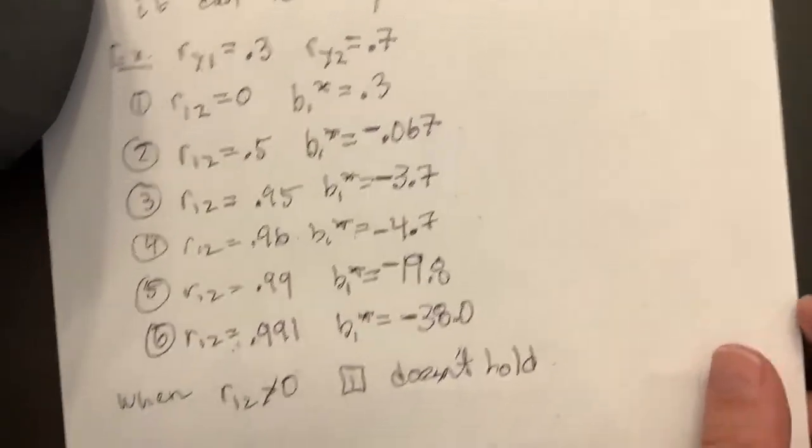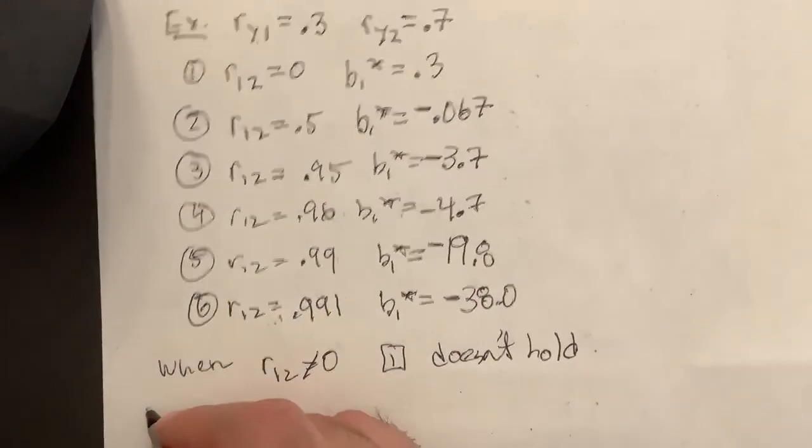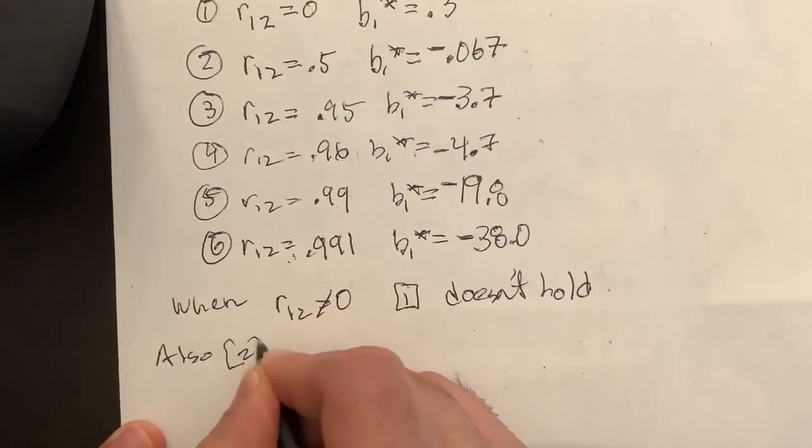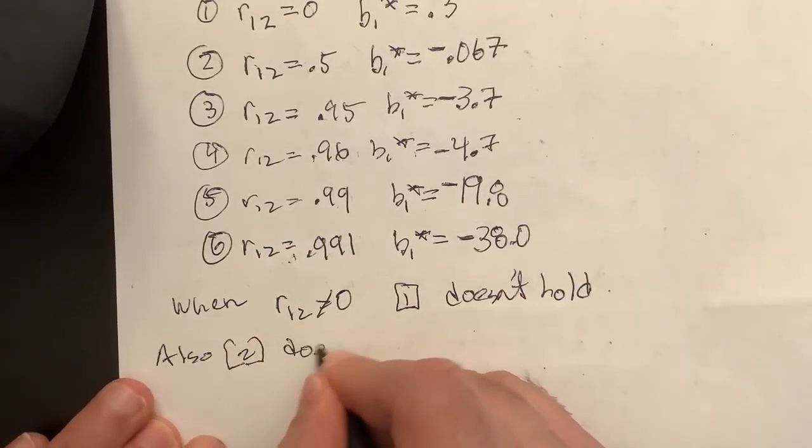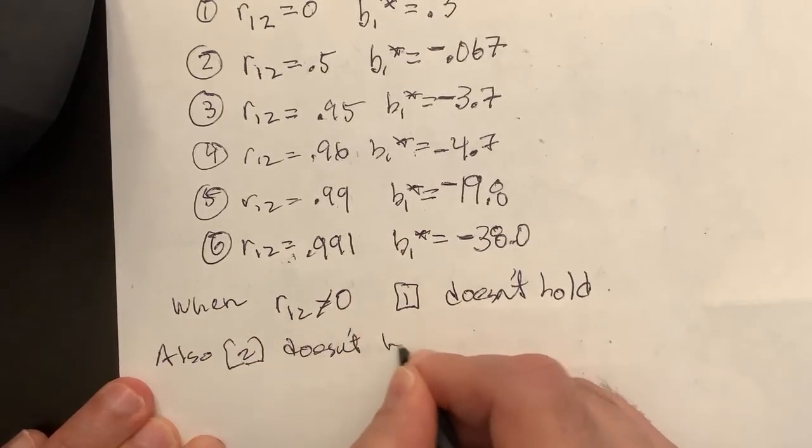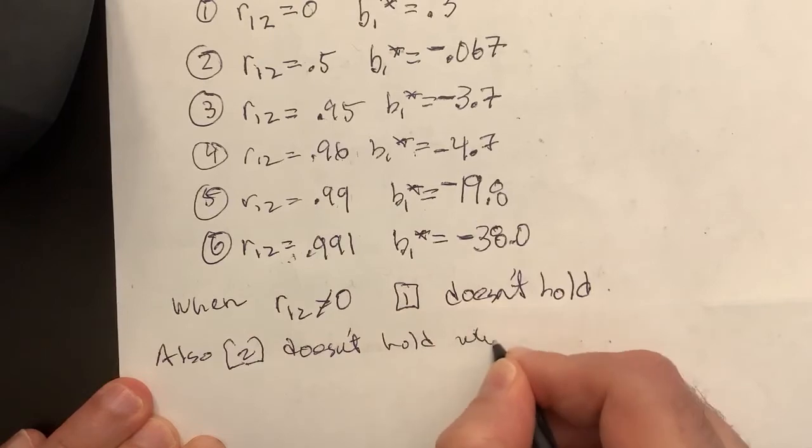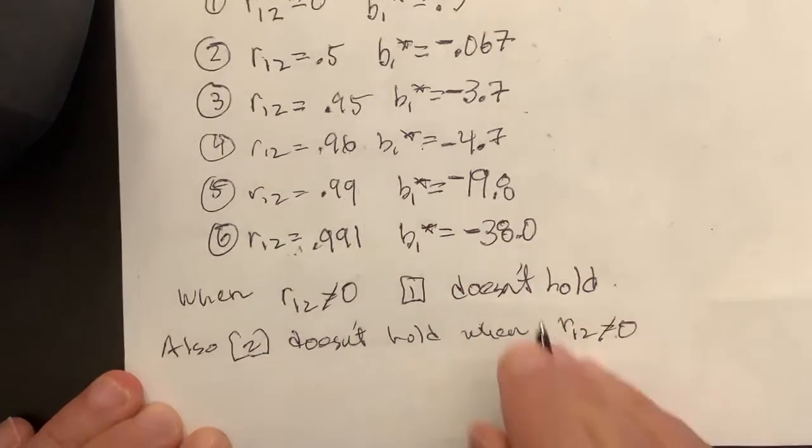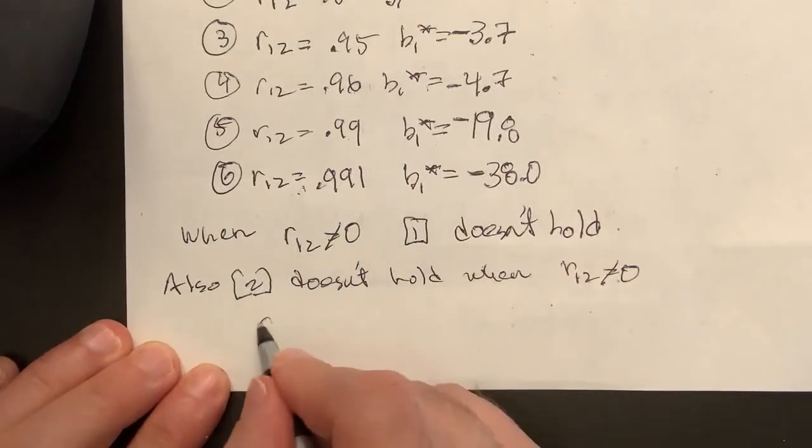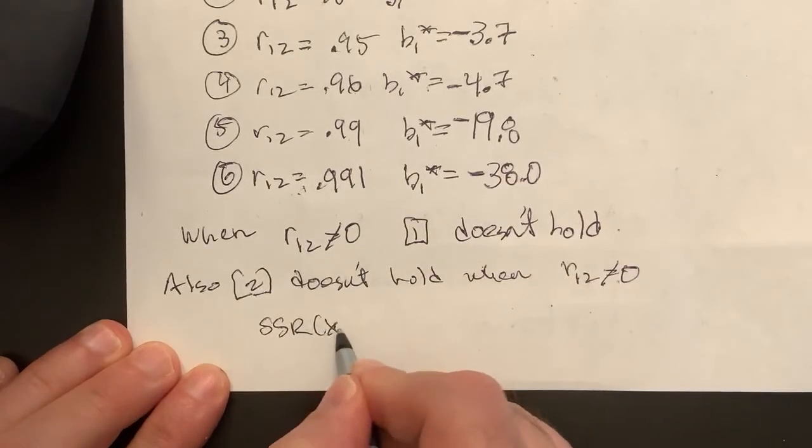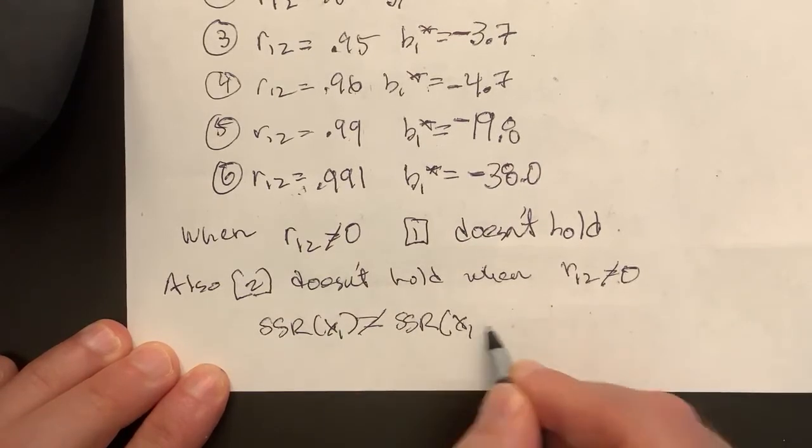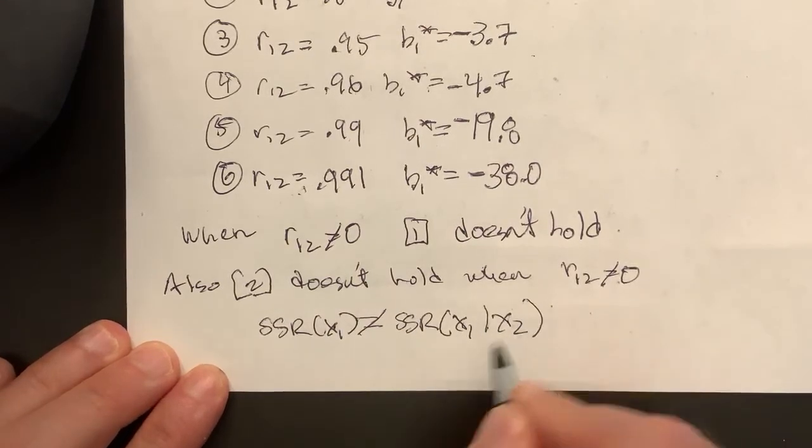So, second thing, second result. Also, let's write it down. Also, 2 does not hold when R12 not equal to 0. In other words, SSR x1 will not be equal to SSR x1 given x2. In fact...